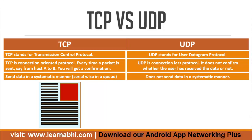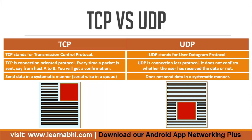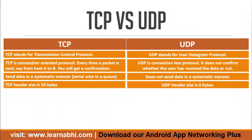On the other hand, if a website were using a UDP protocol, the content of the webpage may load here and there, making it very difficult to read. The size of the TCP header is 20 bytes, while the size of the UDP header is 8 bytes.